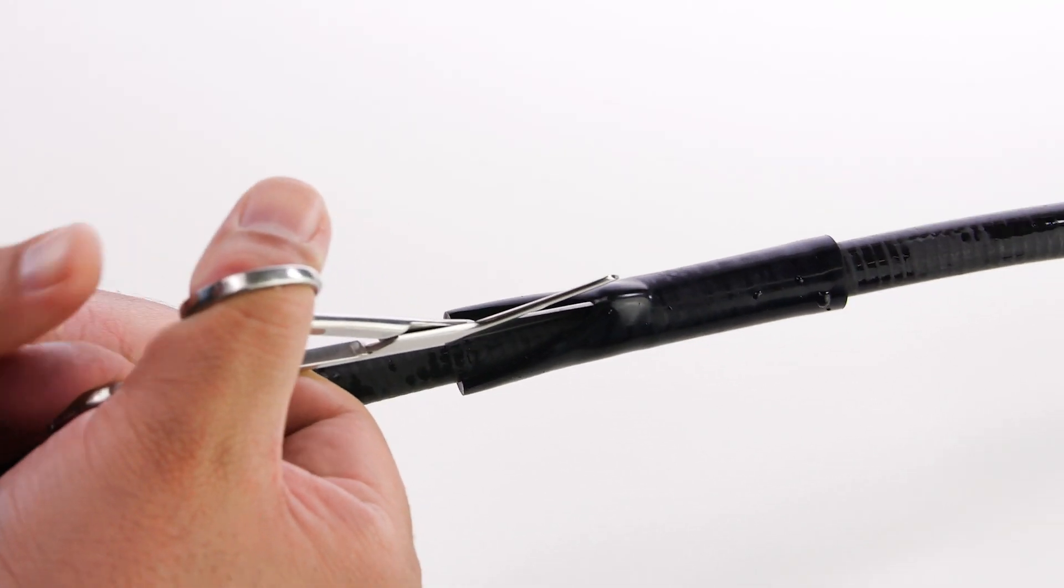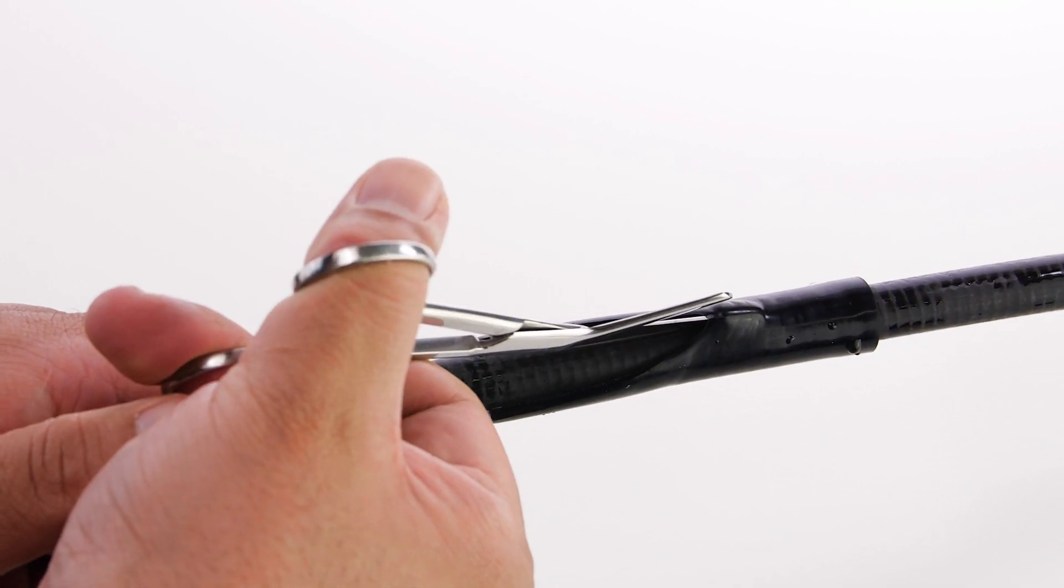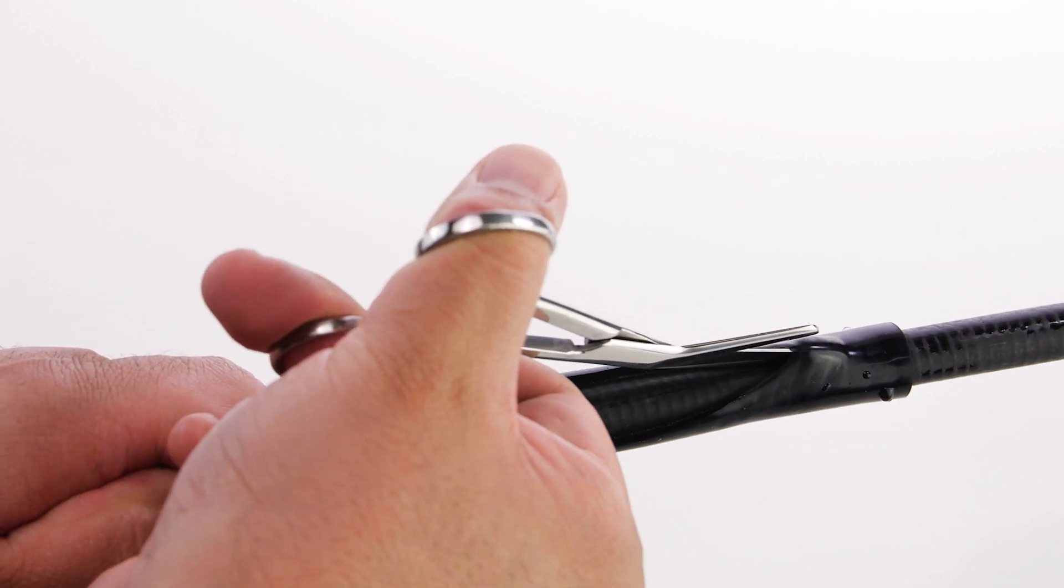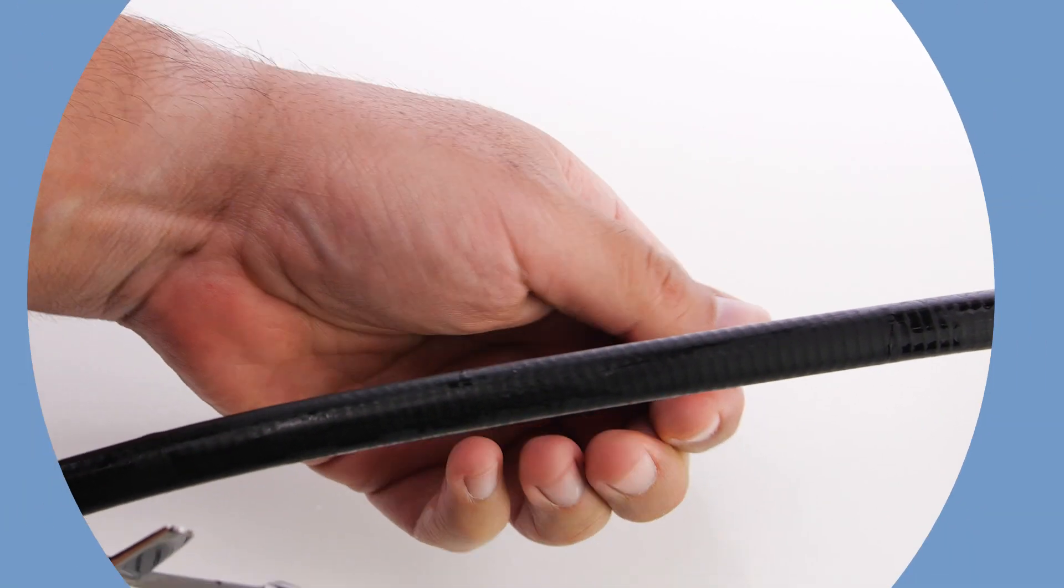Both heat and Cold Shrink are intended to be permanent cable protection solutions and will be difficult to remove. However, if removal is necessary, Cold Shrink will be cleaner and easier to remove, in large part because it has no glue.